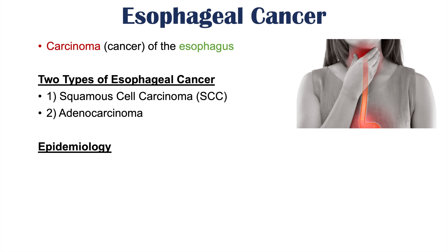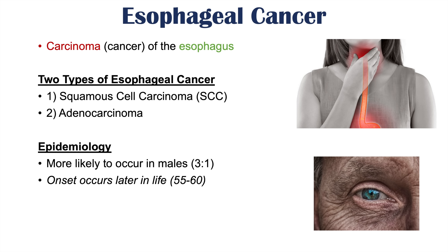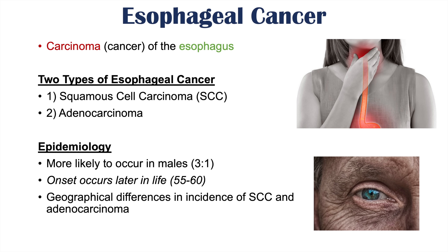Esophageal cancer is more likely to occur in male patients — males outnumber females three to one. The onset occurs later in life, generally between the ages of 55 to 60. In North America, the incidence of squamous cell carcinoma has decreased substantially over the last few decades.